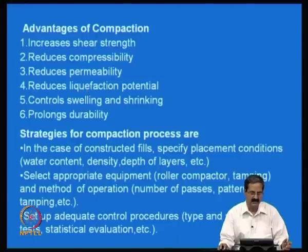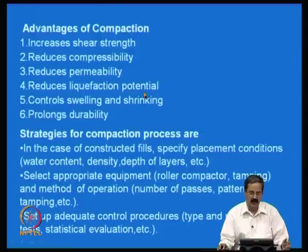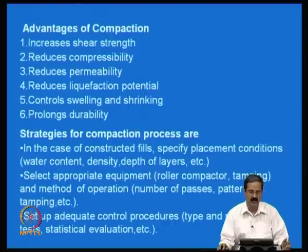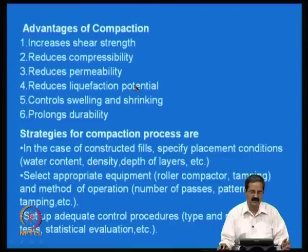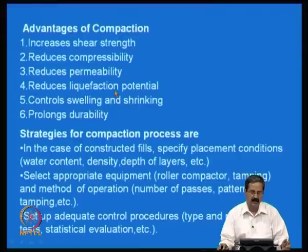As just mentioned, one of the dam failures during the Bhuj earthquake involved a dam called Chang Dam, which totally collapsed because the compaction of the soil in the initial stages was not very good. People were using methods like flooding for compacting sand, which gives relative densities of only about 60 to 70 percent. To get very good resistance to liquefaction, you must compact to very high densities using good compaction techniques.